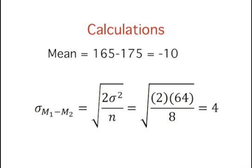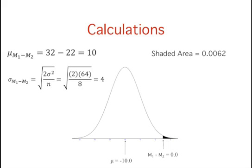As before, the problem can be solved in terms of the sampling distribution of the difference between means, girls minus boys. The mean of the sampling distribution is 165 minus 175, which equals negative 10. The standard deviation of the distribution is 4, as shown. Here is a graph of the sampling distribution of the difference between the means. From this graph, we see that it is unlikely that the mean height for girls would be higher than the mean height for boys. Specifically, a difference between means of 0 is 2.5 standard deviations above the mean of negative 10. The probability of a score 2.5 or more standard deviations above the mean is 0.0062. It is therefore unlikely, but not inconceivable, that the girls' mean would be higher than the boys' mean.